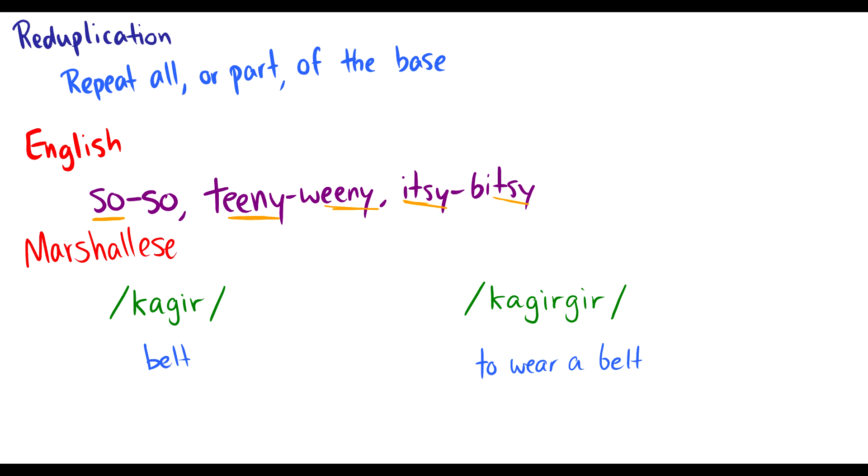However, in Marshallese, which is a language, they do use this reduplication process. For instance, kagir is belt and that's a noun. It's an article of clothing or something you can wear. Now, when they say to wear something, the verb to wear, what they do is they repeat the last syllable. So kagir becomes kagirgir. And this extra duplication means to wear a. So if I had the word for clothing and I repeat the last syllable at the end of the word, it would mean to wear that piece of clothing.